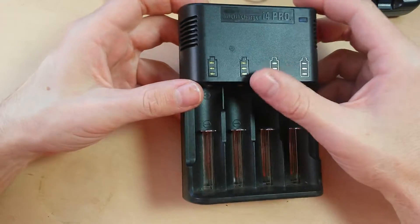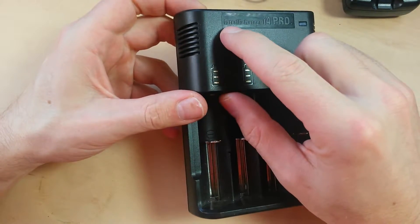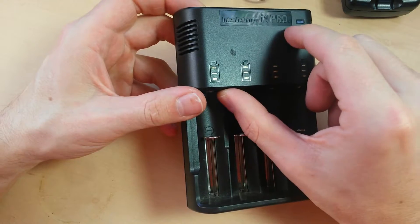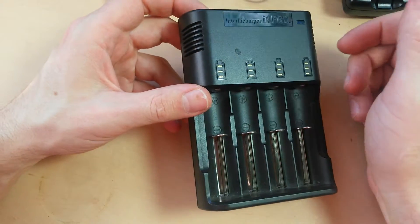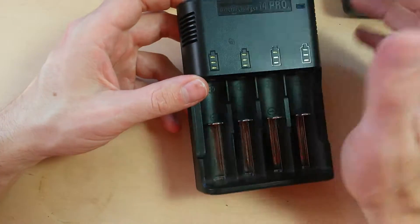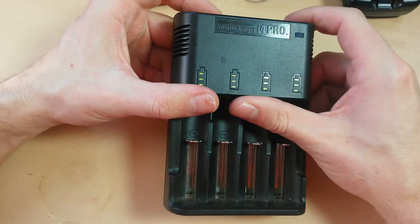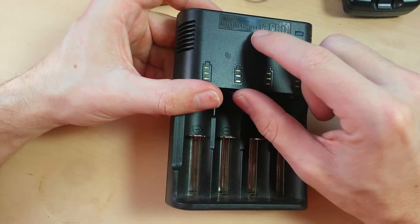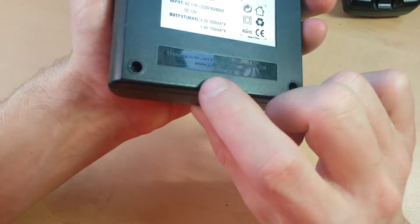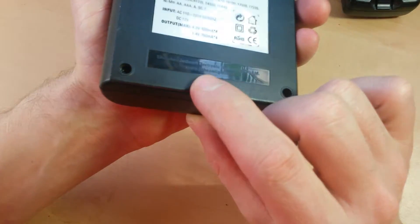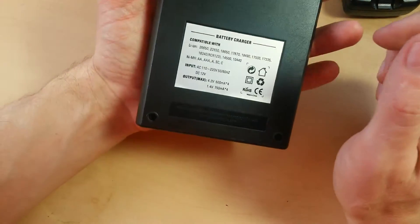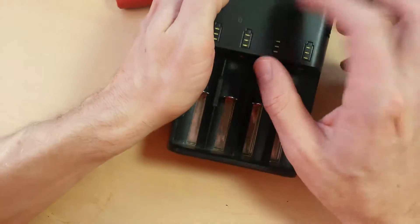Today on Gadget Class we're doing a video review of an Inteli Charger i4 Pro. I think it's supposed to be Intelli Charger, but this company kind of split off from the main company, so there's two i4 Pros out there. We're looking at the jetbeamlight.com version. They are slightly different on the inside, so this review is only going to be good for the Inteli Charger i4 Pro.